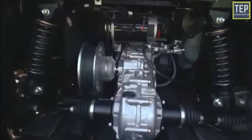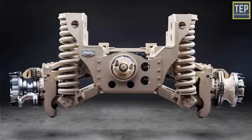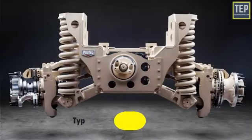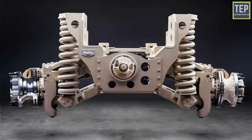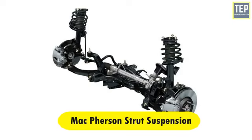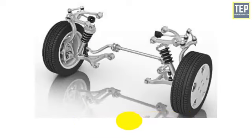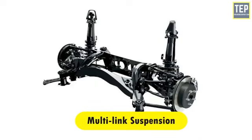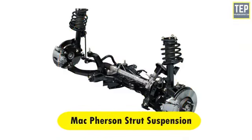Independent rear suspension has almost the same advantages as independent front suspension, but its main advantage is that it reduces the unsprung weight of the vehicle. Within independent suspension, various types are available: MacPherson strut suspension, double wishbone suspension, multi-link suspension, and trailing arm suspension.